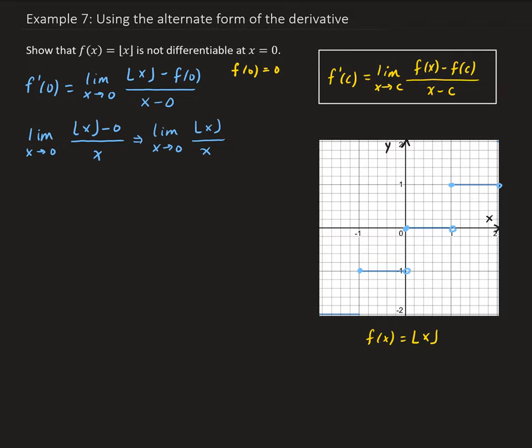We need to look at the left and right-hand limits. Let's first look at the right-hand limit. So we're going to take the limit as x approaches 0 from the right side — the limit of the floor function divided by x as x approaches 0 from the right. Looking at the graph, we know that if we take the floor of 0, we're going to get 0.